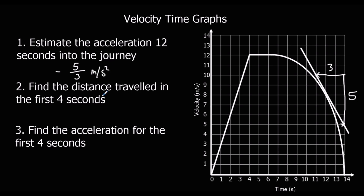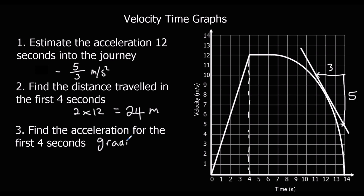Find the distance travelled in the first 4 seconds: it's a triangle, so we do half the base times the height — 2 times 12 gives 24 metres. And for the acceleration in the first 4 seconds, we look at the gradient: for every one across it goes up 3, so the acceleration is 3 metres per second squared.